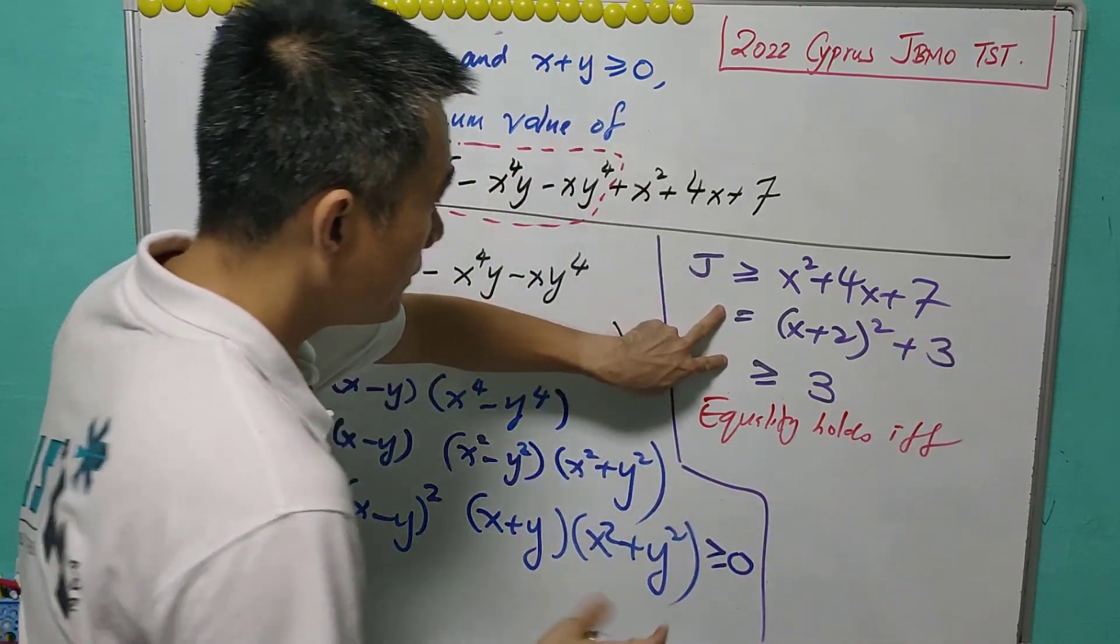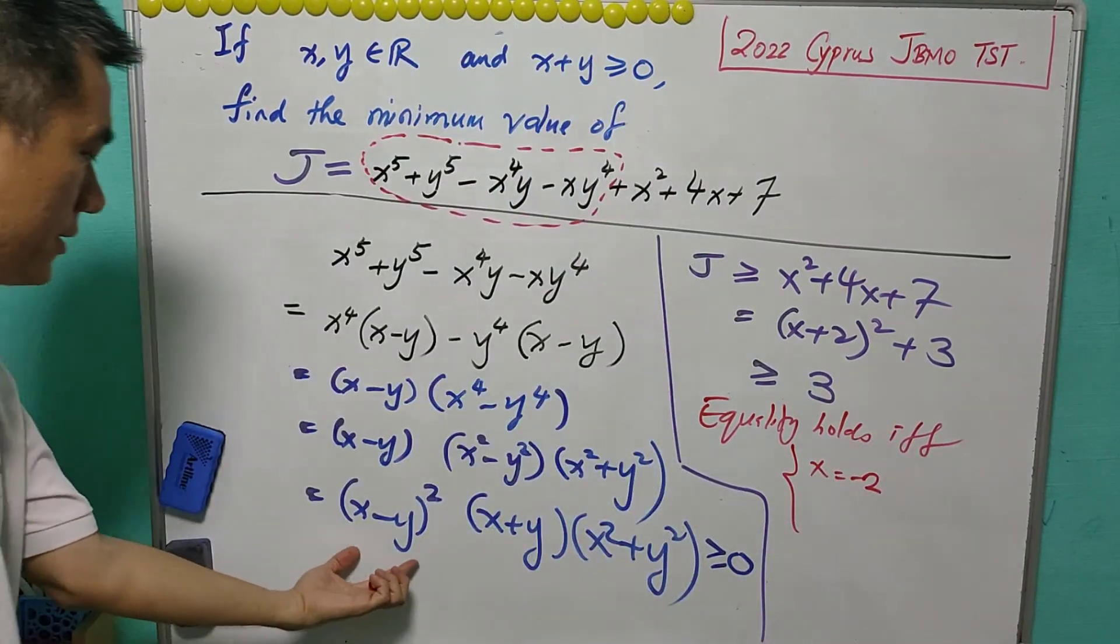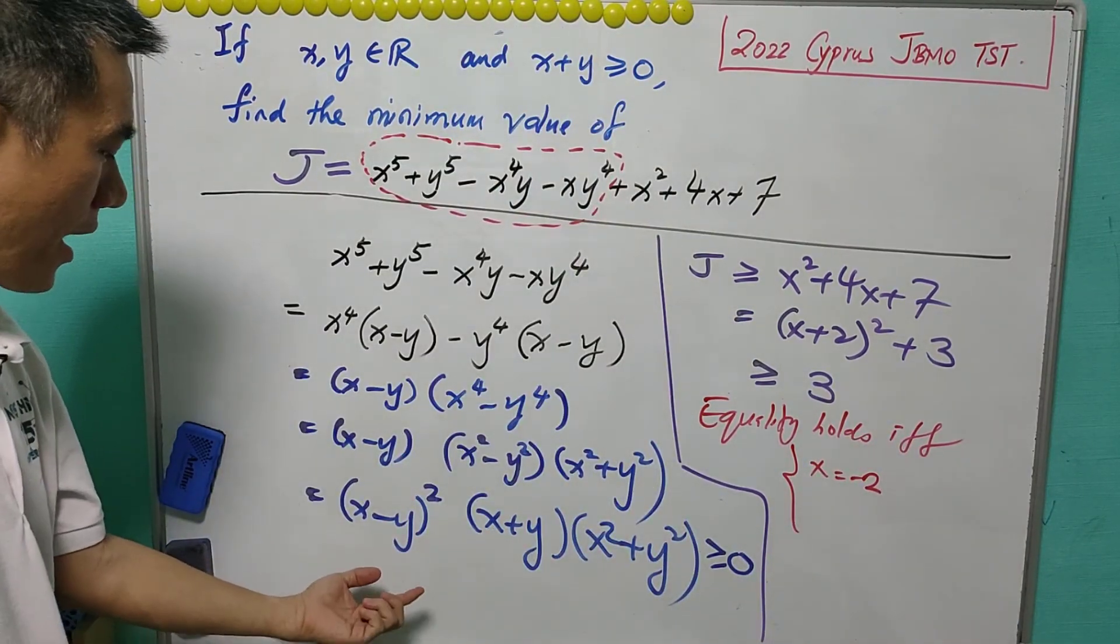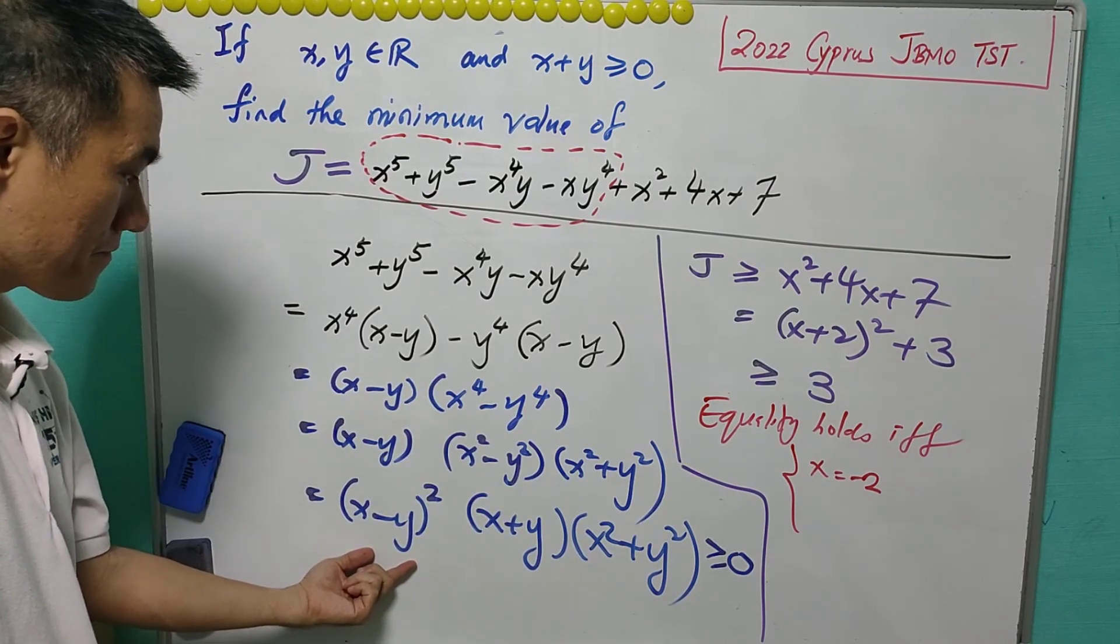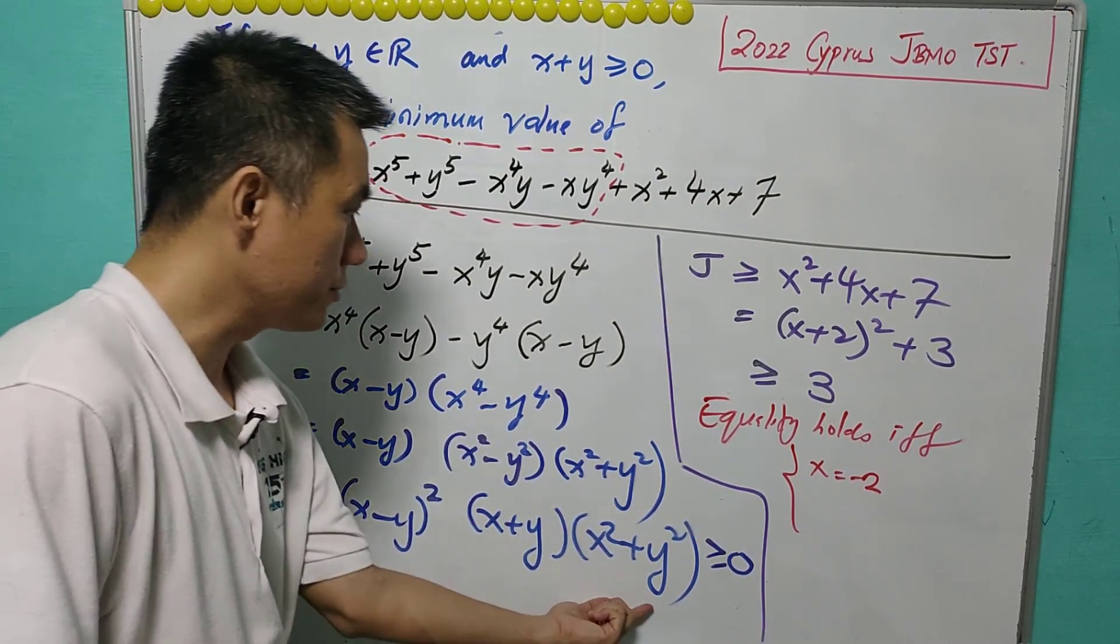if and only if, from here, x equals to negative two. And from here is either, as you mentioned, x equals to y, or x equals to negative y, or both equals to zero. It is not possible here.